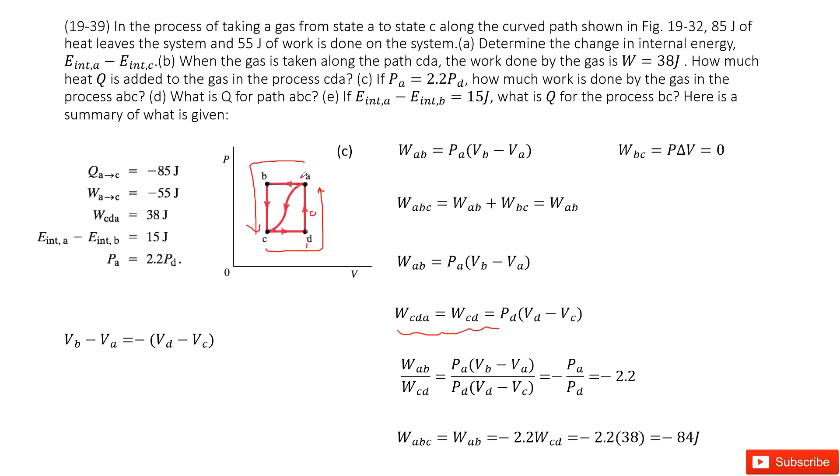So this part we have W_CDA equals W_CD because this part doesn't do work, right? And then we can write it as P_D times (V_D - V_C). Now next part we look at ABC. It looks like if we want to compare ABC, how can we do that? We can write it as, you can see AB does the work, but BC, did BC do the work? No.